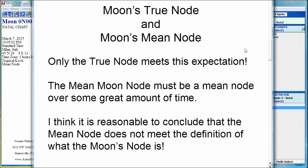That's rather disturbing, just conceptually. Only the true node meets our expectation that when the Moon is on the ecliptic plane, the node would be conjunct either the North node or South node. The Moon's mean node is averaged over long periods of time, and the ecliptic plane and the Moon's path change so much that with the mean node, the Moon is not even conjunct the north node when it's on the ecliptic plane. I think it is reasonable to conclude that the mean node of the Moon doesn't meet the definition of what the Moon's node is.